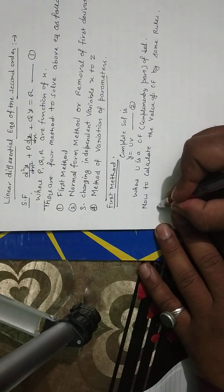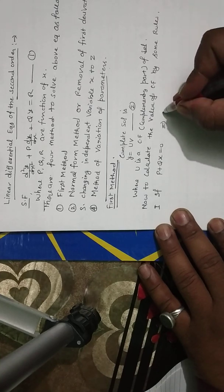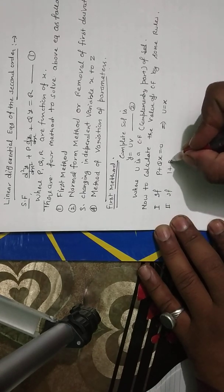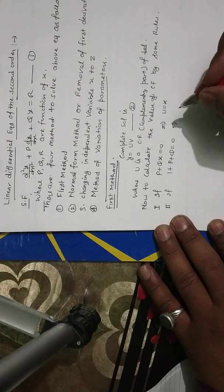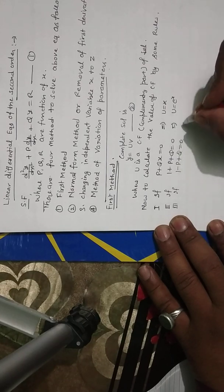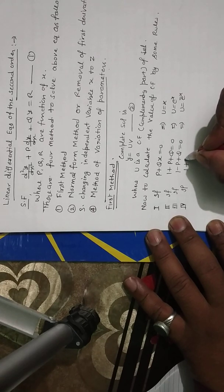Rule number one: if P + Qx = 0, then u = x. Rule number two: if 1 + P + Q = 0, then u = eˣ. Rule number three: if 1 − P + Q = 0, then u = e^(−x). Rule number four: if 1 + P/a + Q/a² = 0, then u = e^(ax).